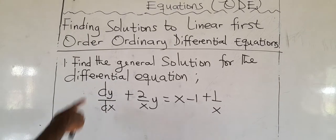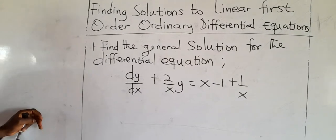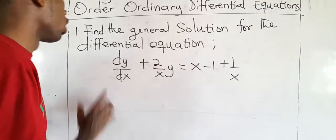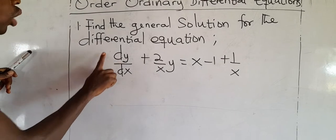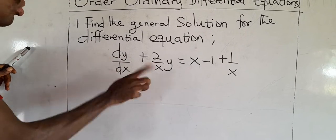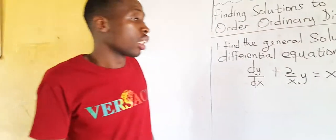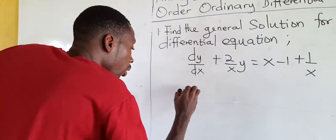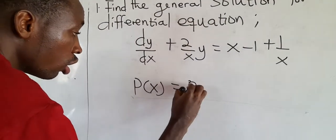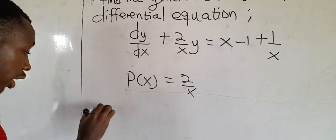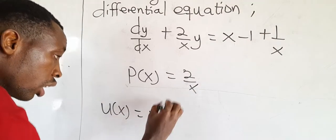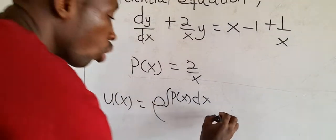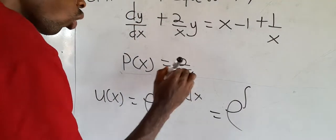Our first question: find the general solution for this differential equation. First check it is a linear first order ODE. Check the coefficient of the derivative is 1 — it is 1, so no problem. P(x) = 2/x, the coefficient of the y term. Our integrating factor u(x) = e to the integral of (2/x) dx. Pulling the 2 out: e to 2 times the integral of (1/x) dx = e to ln(x²) = x².